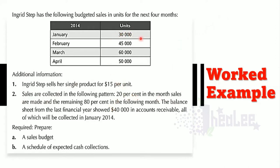What this means is that, for example, for January, whatever amount is budgeted for sales in that month, 20% is expected to be collected in that month, while the other 80% is expected to be collected in February. The balance sheet from the last financial year showed $40,000 in accounts receivable, all of which will be collected in January 2014. Note two relates to the schedule of expected cash collections.